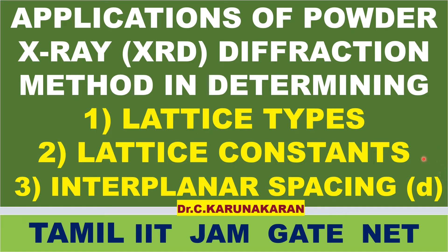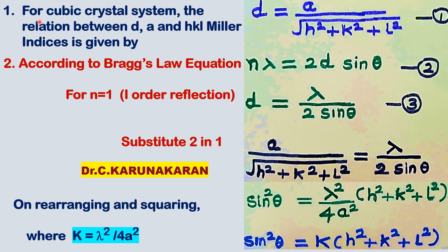For a cubic lattice, the lattice constant A equals B equals C. The lattice constant describes the interplanar spacing between various planes. For a cubic crystal system, the relationship between interplanar spacing, lattice unit cell length, and Miller indices (HKL) is given by: d = A divided by the square root of (H² + K² + L²).